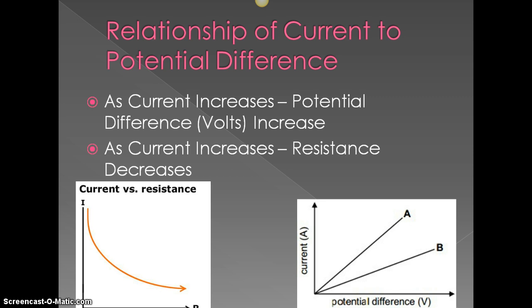If we look at the relationship of current to potential difference, which is voltage, as current increases, potential difference or volts increase. And so you can see that in this graph here. Two examples, example A and example B. Current increases and potential difference or voltage increases. One of the other things here, as current increases, resistance decreases. So our current has gone up and the resistance is low if our current is high.